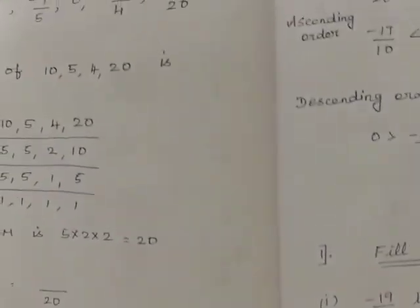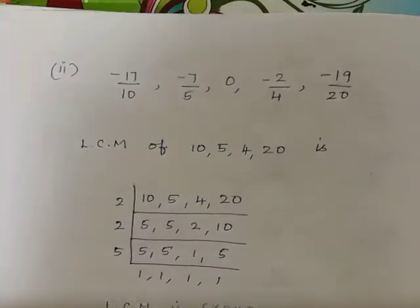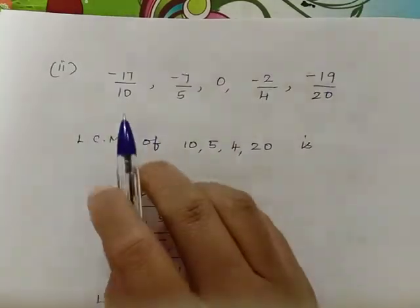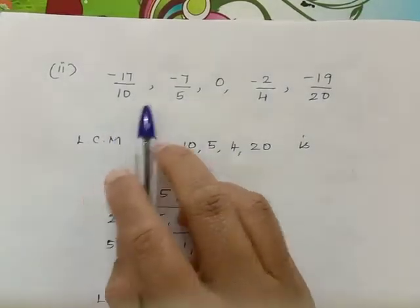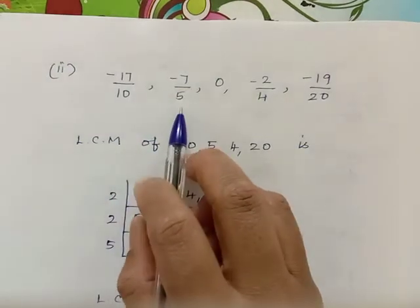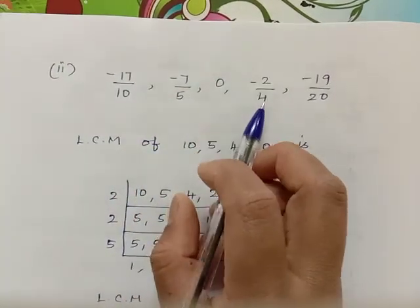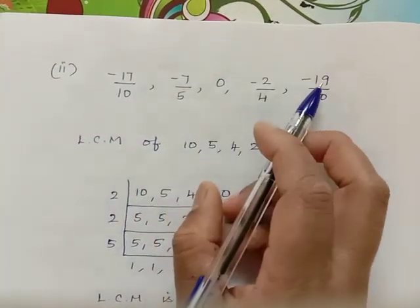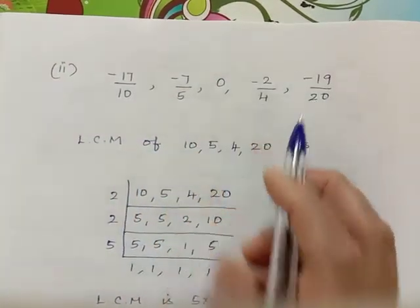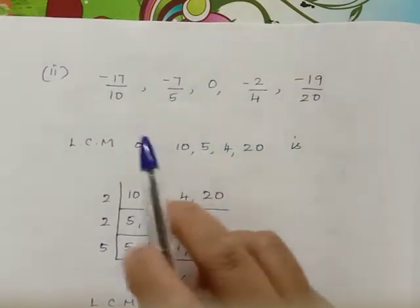Now the second sum, same model: minus 17 by 10, minus 7 by 5, 0, minus 2 by 4, minus 19 by 20.